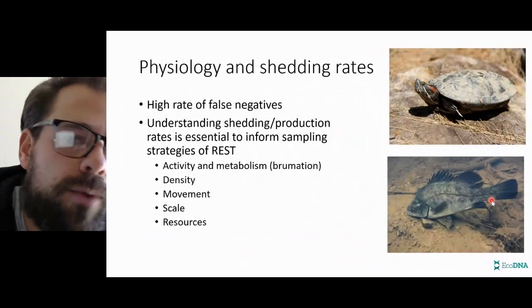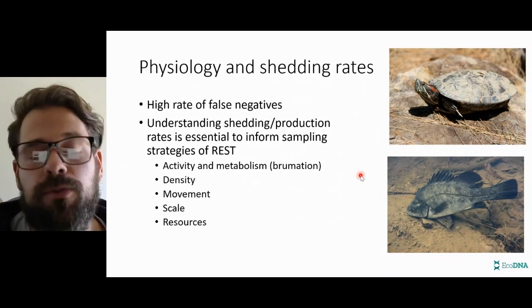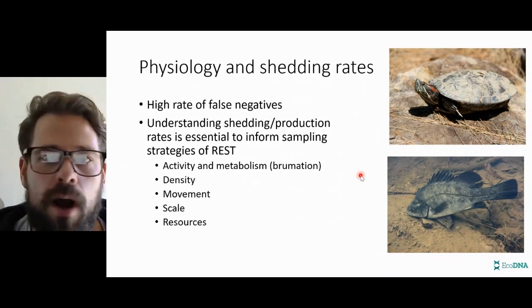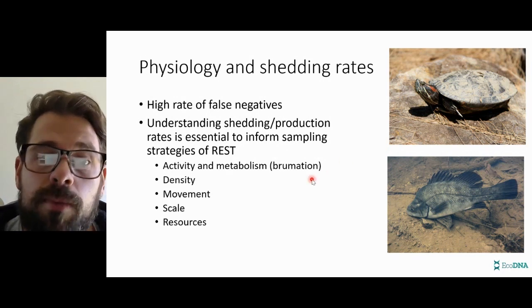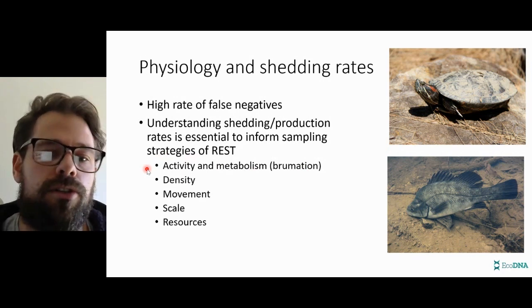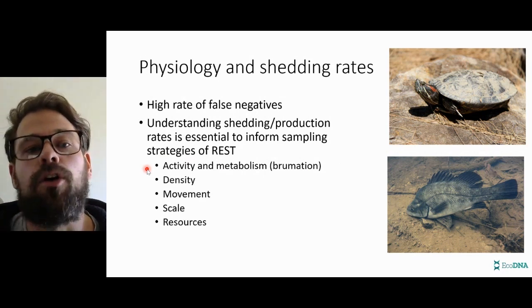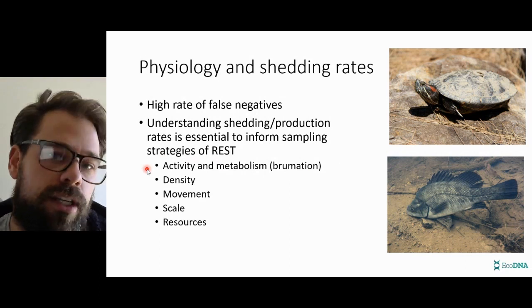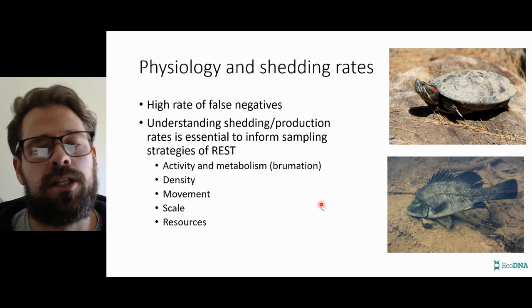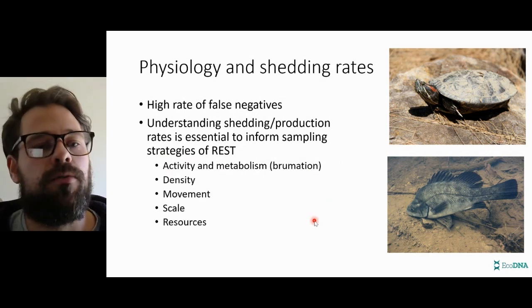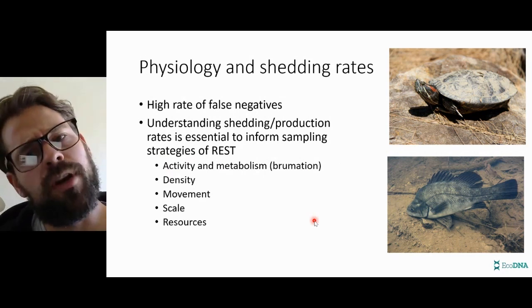Coming back to physiology and shedding rates, a turtle and a fish have a very different way of shedding DNA into the environment. This turtle is hanging out of the water — it also has scutes that may not be shedding so much. On top of that, it has really interesting life stages: it goes into brumation for part of the year and is really dependent on its metabolism to shed DNA. That makes it really tricky to detect using eDNA, as opposed to a fish that is maybe moving around a lot more and dispersing DNA much more evenly. So there is going to be a bit of a challenge implementing eDNA for red-eared slider research.